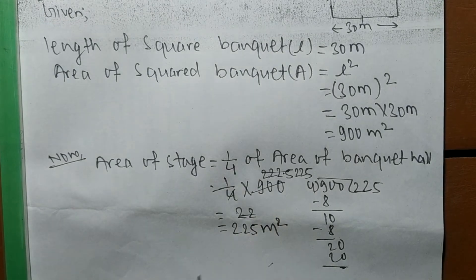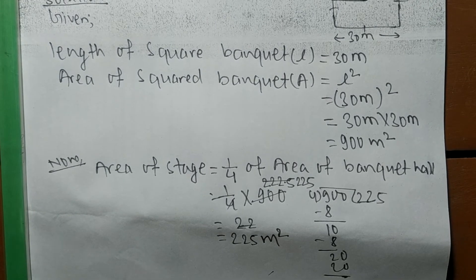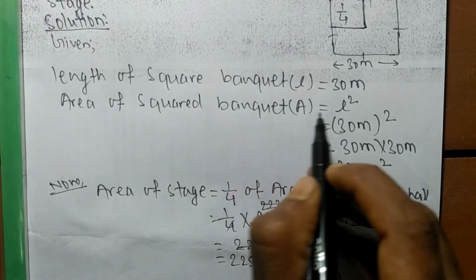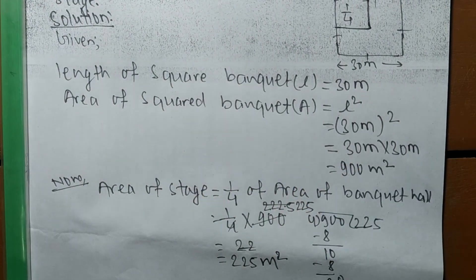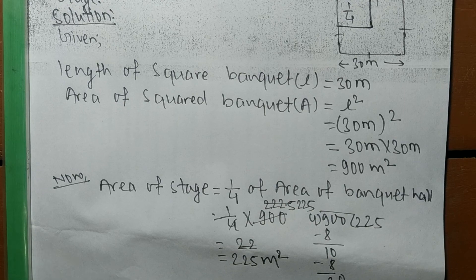In this way we can solve a problem related to any square-shaped object or structure. Just remember: the area of a square is equal to L squared. That's all for today. If you have any problem regarding math and science, just comment your question below and we shall provide a video solution. Thank you, thanks for watching.